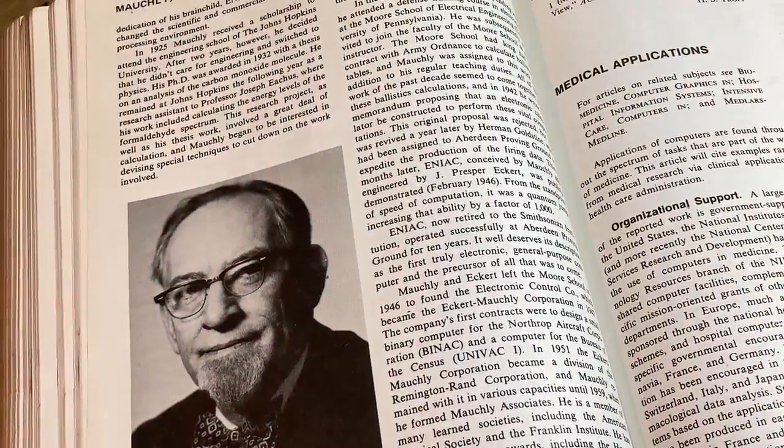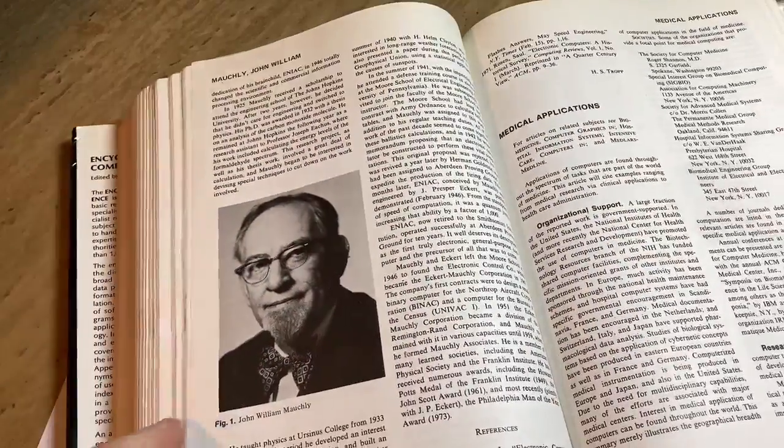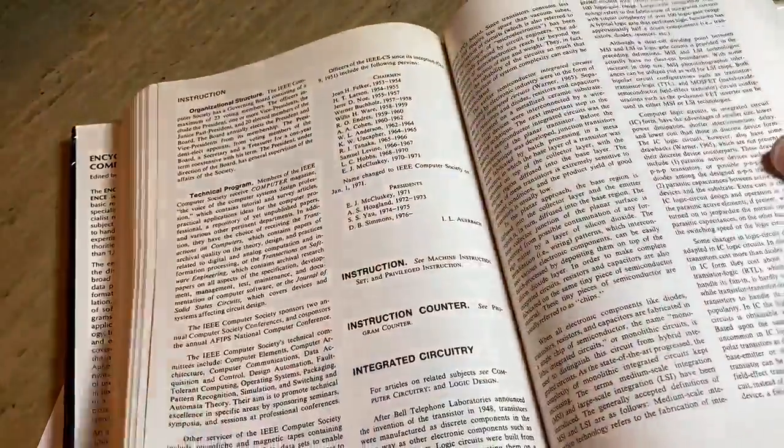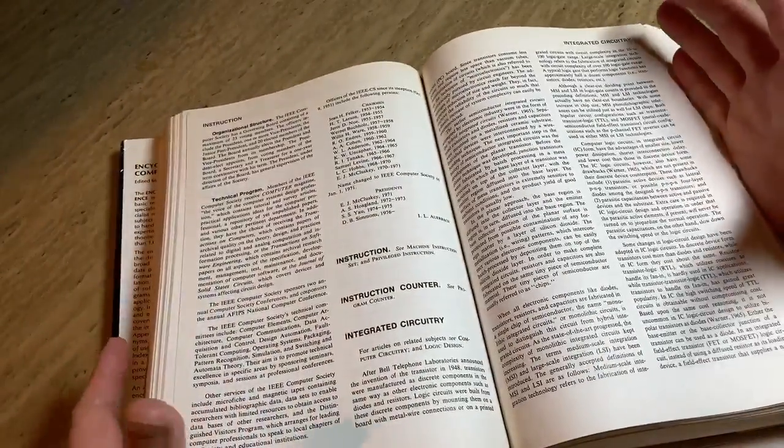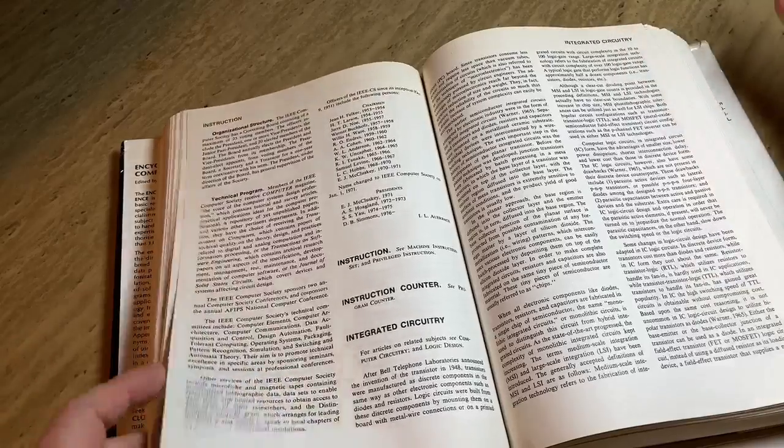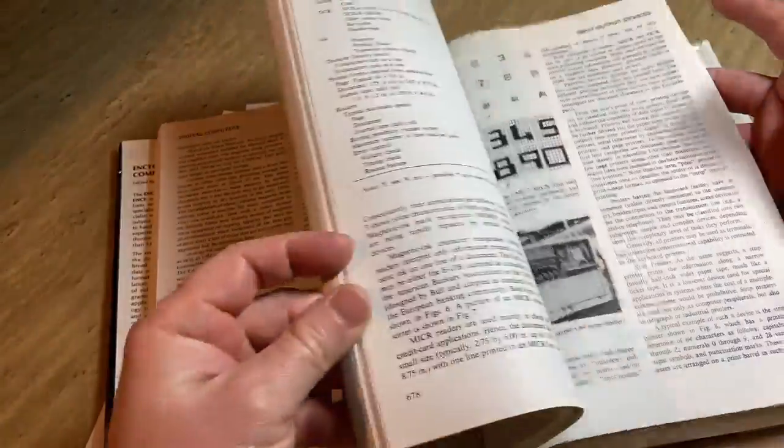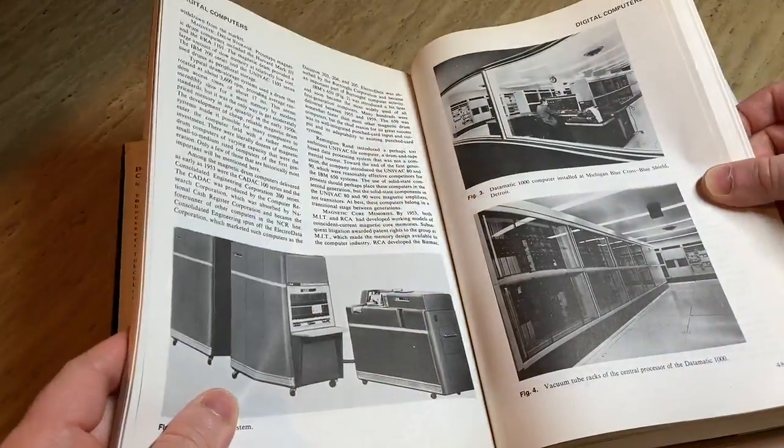You see, you find interesting stuff like this in old books. Obviously, we have the internet, so you can Google stuff, but this gives you all the information right there. Physically, it's with you. If you lose power, you can still read by candlelight if you need to. So, you have it there physically.